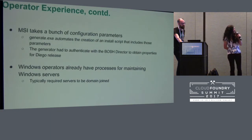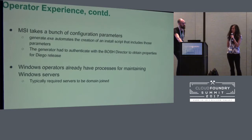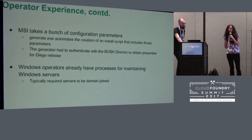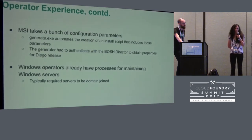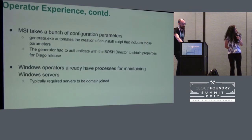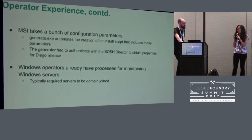Another thing we encountered is that Windows operators already have a preferred method for maintaining configuration on their servers — typically domain joining the servers together and applying group policies. This is another possible point of failure because those policies could interfere with settings we needed for our technology to function properly. An example might be enabling interactive logon for IIS users. We discourage this practice and consider domain join inconsistent with 12-factor principles — an anti-pattern for CF.